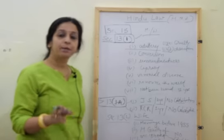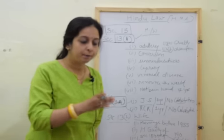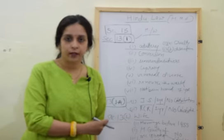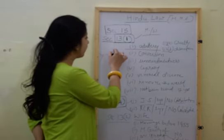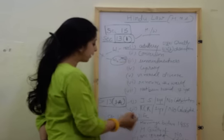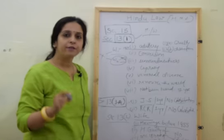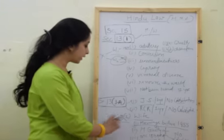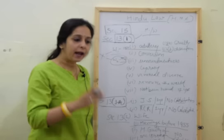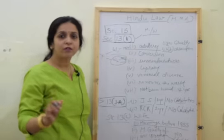If a marriage was solemnized prior to 1955 — suppose a person had wife number one and wife number two, both married prior to 1955, then both marriages were valid. But after the commencement of the Act it is not allowed. So if a person had a legally married wife and then married again, the second wife is having this particular ground under Section 13(2)(1). If the husband already has a legally married wife, the second wife can apply for divorce under Section 13(2)(1).